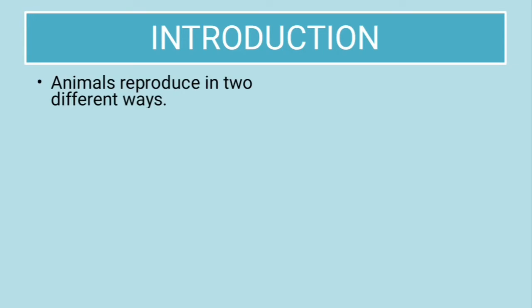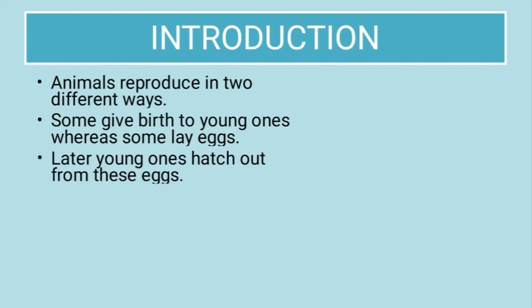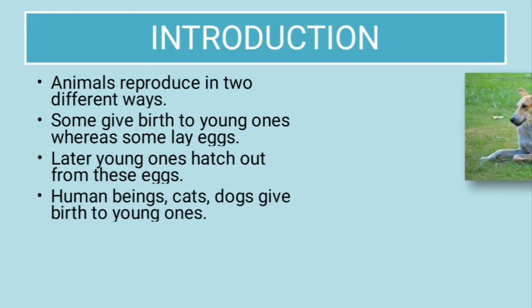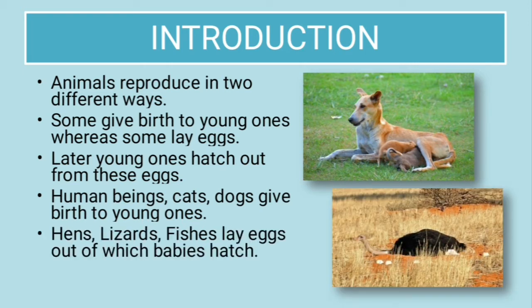Animals reproduce in two different ways: some give birth to young ones, whereas some lay eggs and let their young ones hatch out from them. Human beings, cats, and dogs give birth to young ones — this is a picture of a dog. And hens, lizards, ostriches, and fishes lay eggs out of which babies hatch. This is a picture of an ostrich.